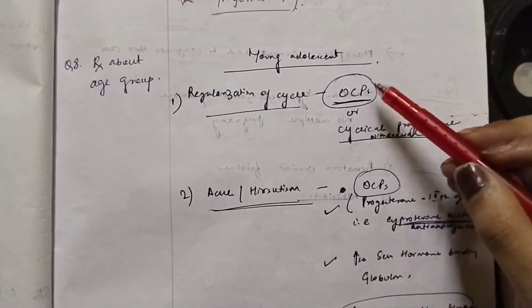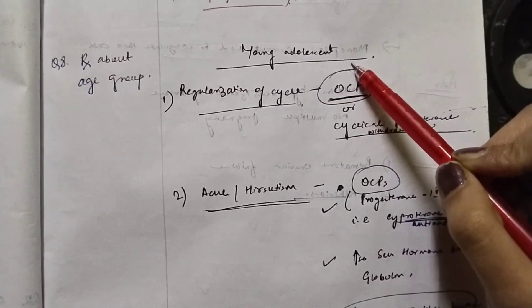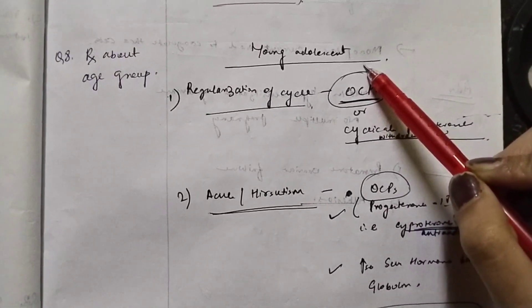Now there is treatment as per the age group. There can be young adolescents who are not planning pregnancy now and there are women in the reproductive age group who are planning pregnancy.